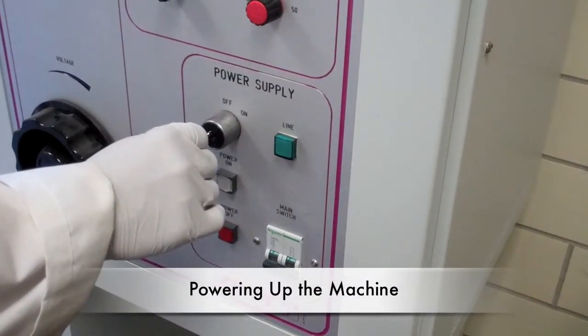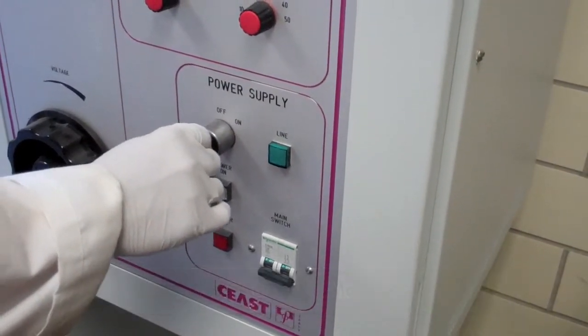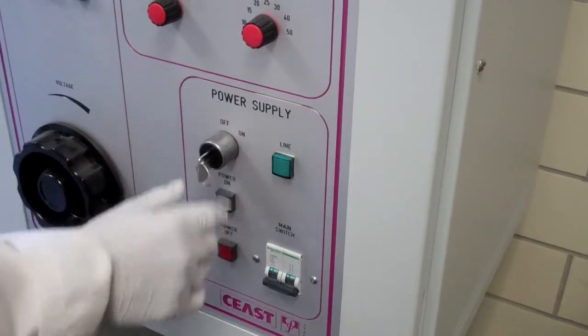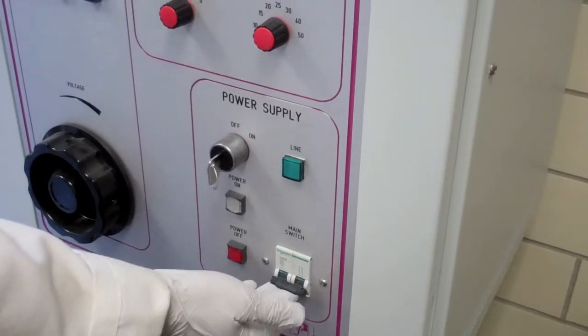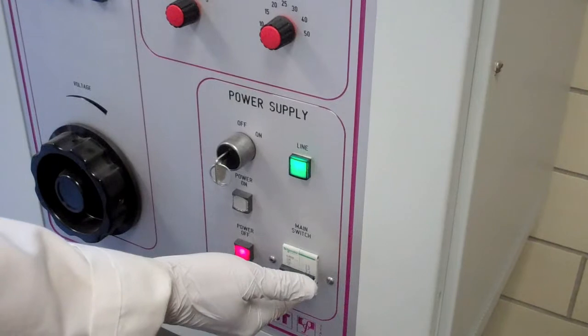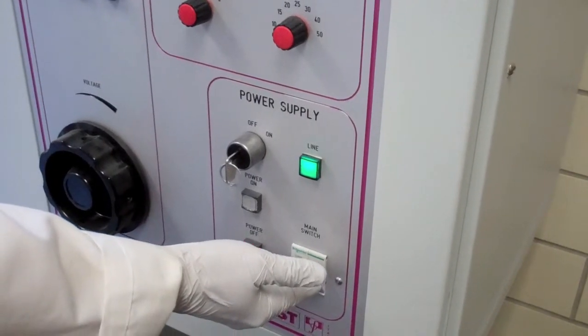To use the instrument, a key must be obtained from the individual responsible for the instrument's maintenance to turn the applied voltage on and off. The main switch must be flipped to the on position before lifting the lid and inserting the samples.